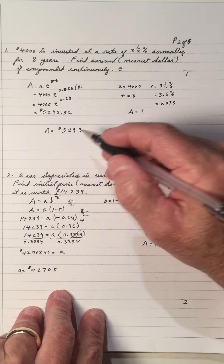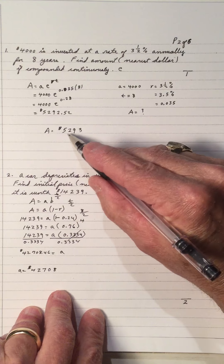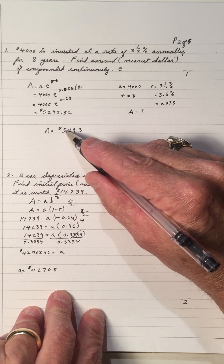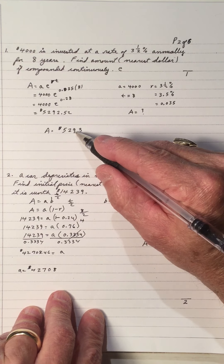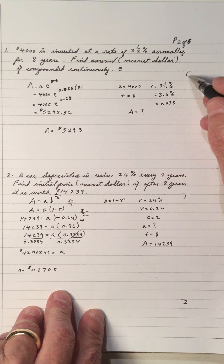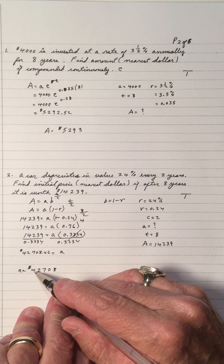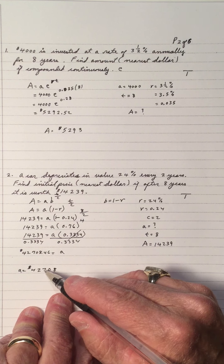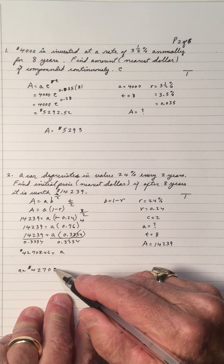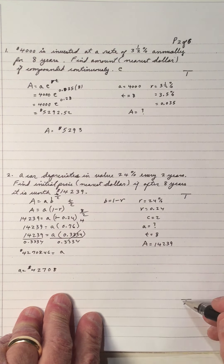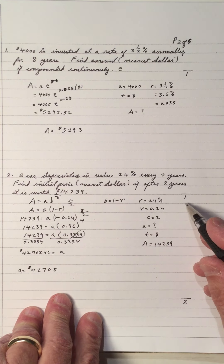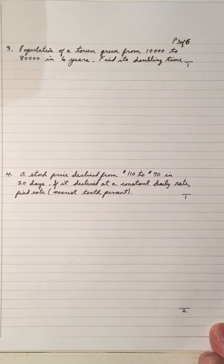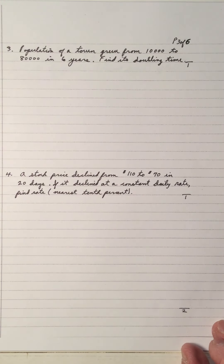If you had $5,293 for question 1, give yourself a mark. If you have $42,708 for question 2, give yourself a mark. Total up the page and give yourself two marks. Let's continue.